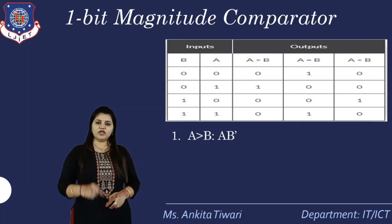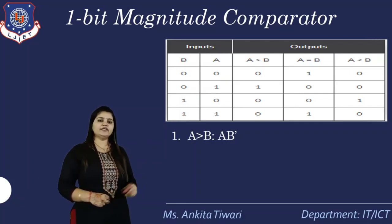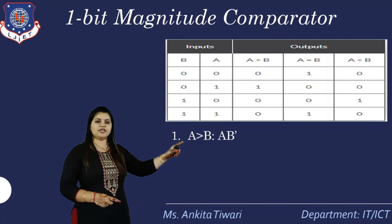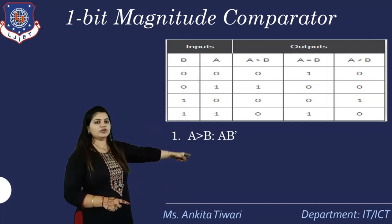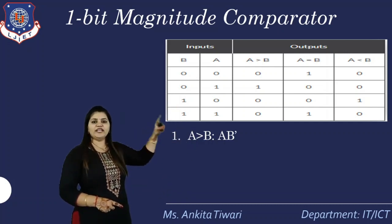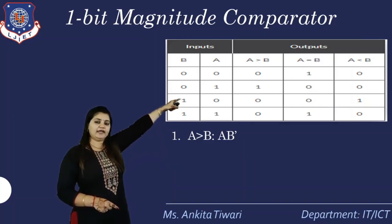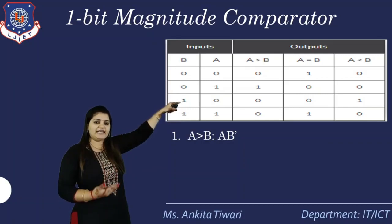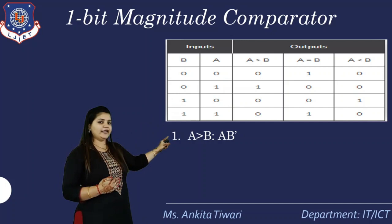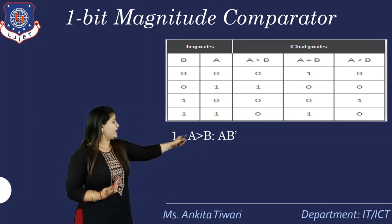From the truth table, we derive three Boolean equations. For a greater than b, the output is 1 only when a is 1 and b is 0, so the equation is: a greater than b = A·B̄. For a less than b, the output is 1 only when a is 0 and b is 1, so the equation is: a less than b = Ā·B.